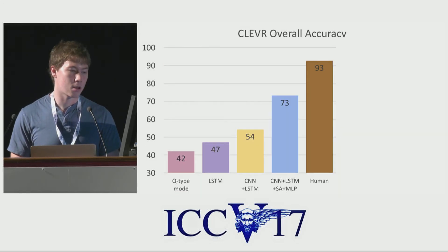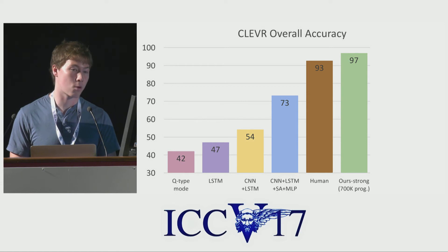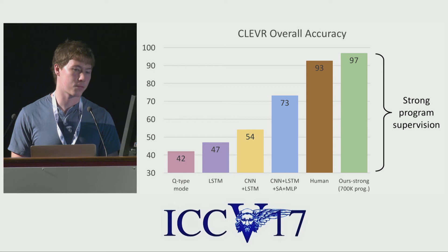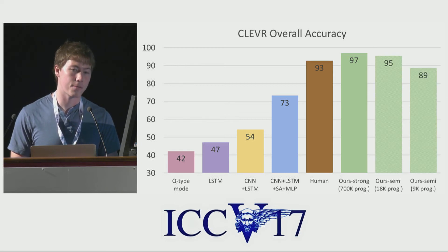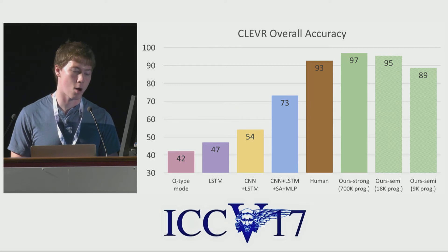So now, when we test this model on the CLEVR dataset, we achieve 97% accuracy overall, which significantly outperforms all other models and also outperforms human workers on Mechanical Turk. However, this comparison is a little bit unfair because our model was trained with a ground truth program for each of the questions in the CLEVR dataset. We can slightly relax this constraint by training with fewer program supervisions. When we train with 18,000 programs from the dataset, we still outperform all prior methods and humans. And when we train with just 9,000 programs, we still outperform all prior work.